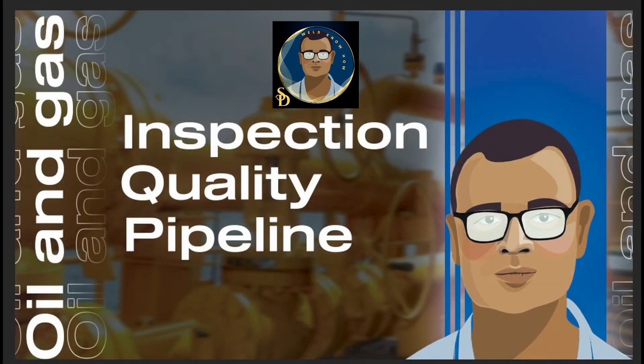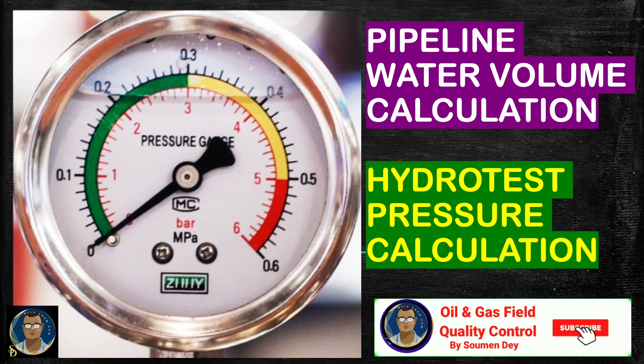Hello friends, welcome to my channel. This is Somen from Oil and Gas Field Quality Control. Today is the third video for the hydro test of pipeline series. Today we will see how we can calculate the volume of water required for hydro test — this is a very simple calculation. Next we will learn how the hydro test pressure has been calculated by the designer, and we can do it easily by ourselves in case we need to do it on site. Let us start.